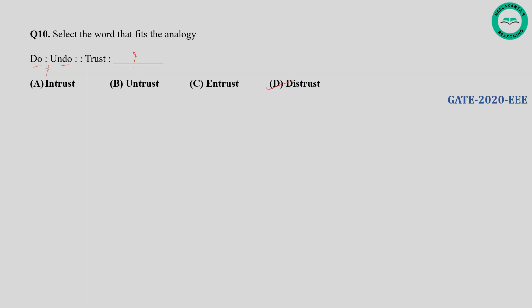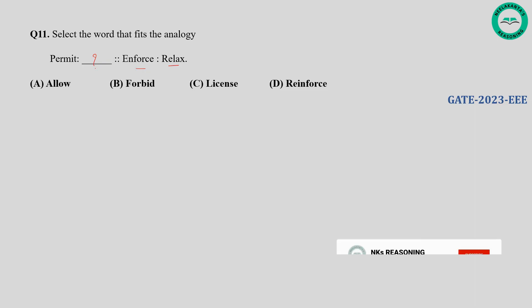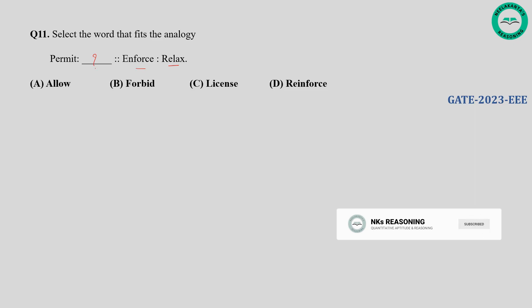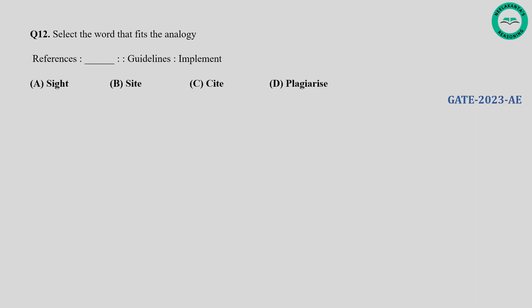Question number eleven: Select the word that fits the analogy — Permit, blank, Enforce, Relax. The relationship is about allowing or its opposite. When you permit, you allow something, and when you enforce, you ensure something is happening, which is opposite to relax. So the word that fits is forbid. Option B is correct.